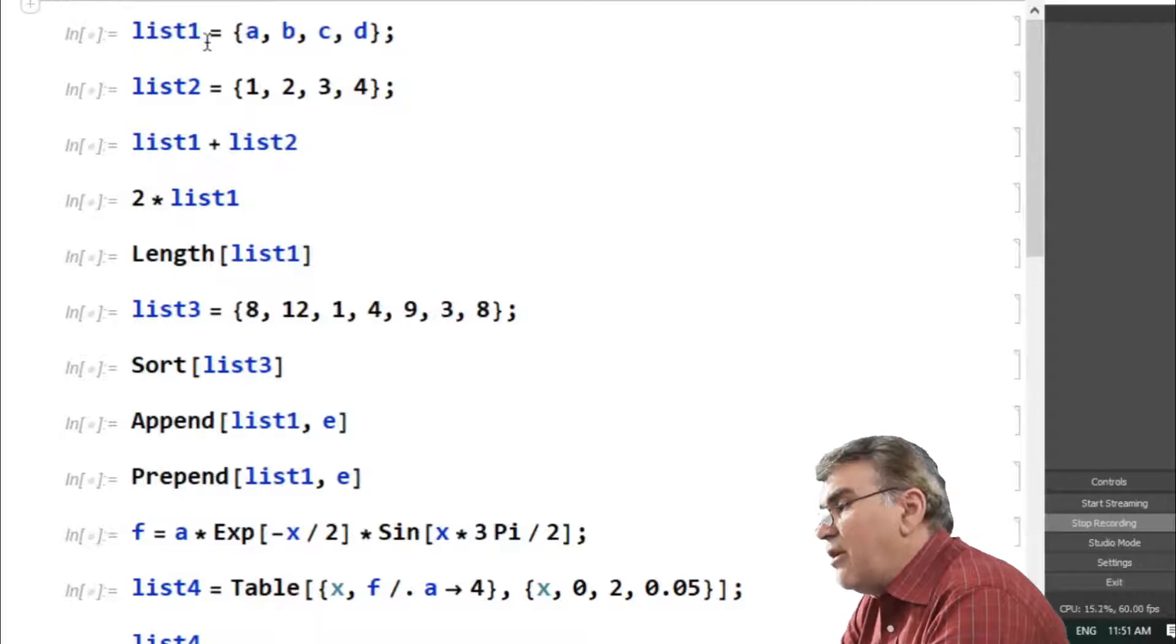The second list I am constructing from numbers. Every number is followed by a comma and all of them are enclosed inside curly braces, so these two define two different lists.